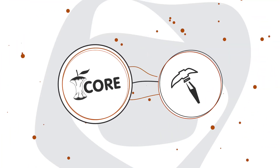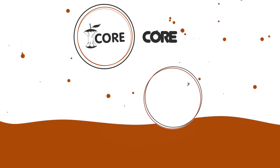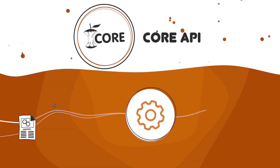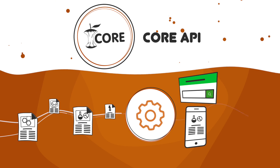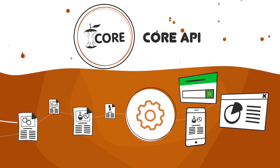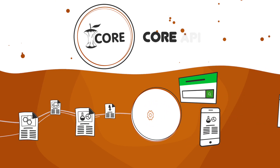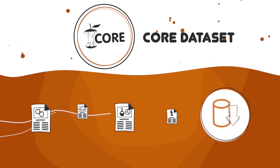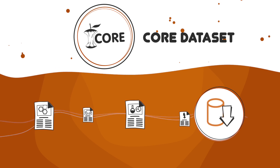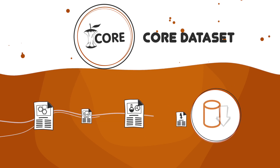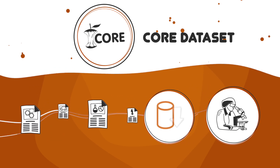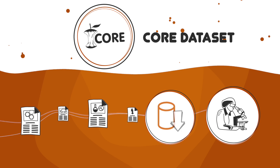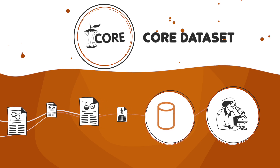How can you start mining CORE data? Through the CORE API you can interact with CORE data in real time — it's perfect for building production applications. The CORE dataset enables you to download all CORE data and experiment. You can conduct research, run batch processes and develop application prototypes.